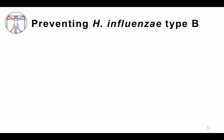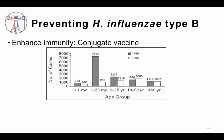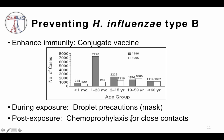To prevent H. flu type B infection, we enhance immunity. There's an excellent conjugate vaccine that has essentially eradicated H. flu type B as a cause of meningitis in many parts of the world. Data from 1986 to 1995 shows a dramatic, near-complete reduction in meningitis in affected age groups after the vaccine was introduced. During exposure, droplet precautions are recommended, and following exposure, chemoprophylaxis for close contacts is advised.